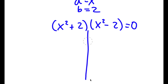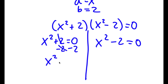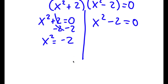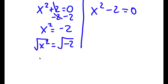So now this gives me two equations. I get x squared plus 2 is equal to 0, and I get x squared minus 2 is equal to 0. For x squared plus 2 equals 0, I can subtract 2 on both sides, so I get x squared is equal to negative 2. Then I can take the square root on both sides to cancel out this power, and I get x is equal to positive or negative square root of negative 2.